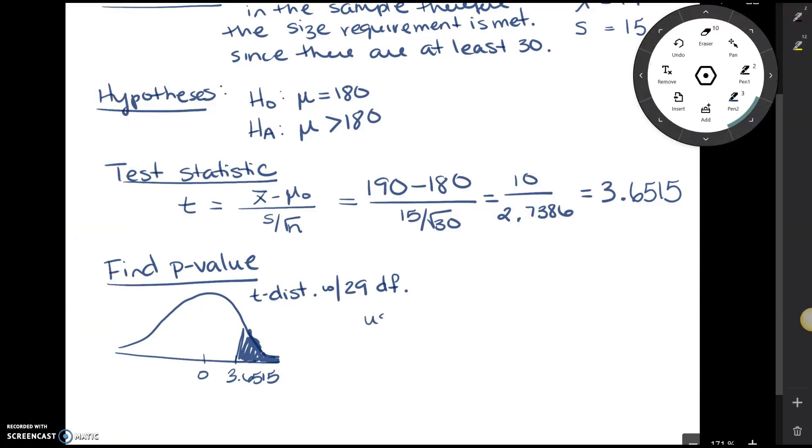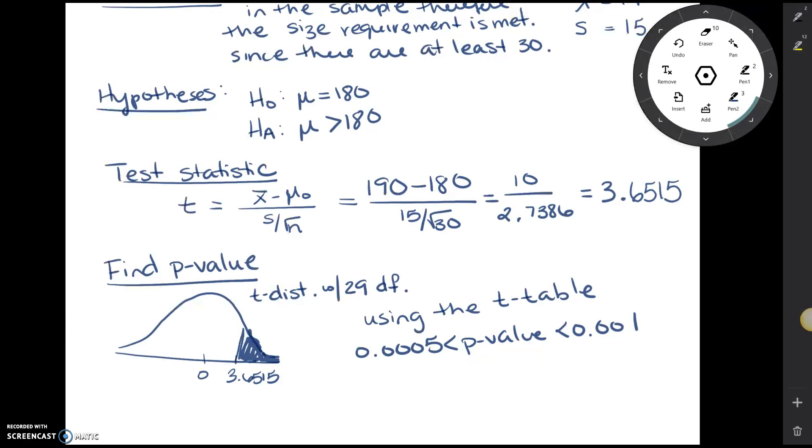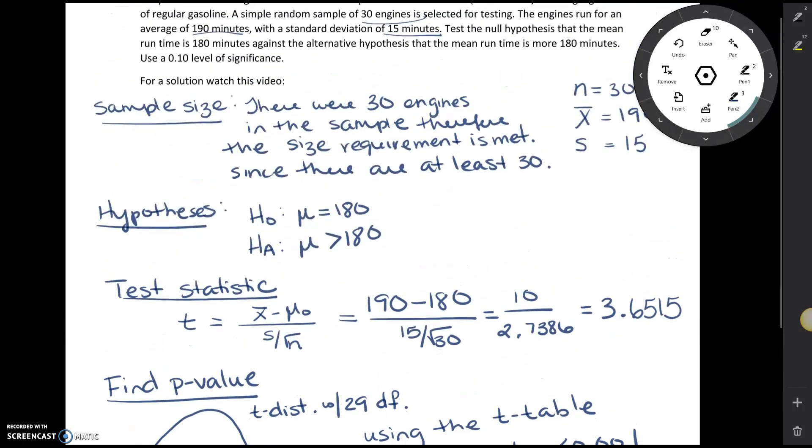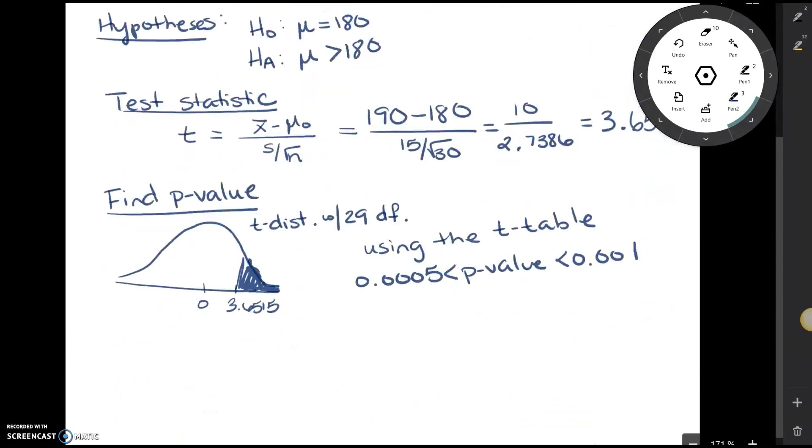Going back, we have using the t-table, we found that the p-value was somewhere between these two numbers. Notice that the p-value is somewhere between these two numbers. So that means the very largest it could be is close to 0.001. But all we really care about is its relationship to alpha. Alpha in this case is 0.10. Therefore, the p-value is less than 0.10, which is equal to alpha. And that's what we really care about. That's because the largest the p-value could be was 0.001, so that has to be less than 0.10.